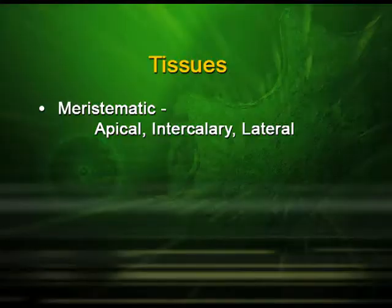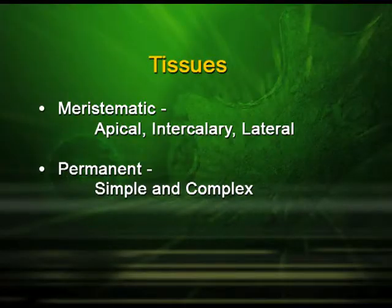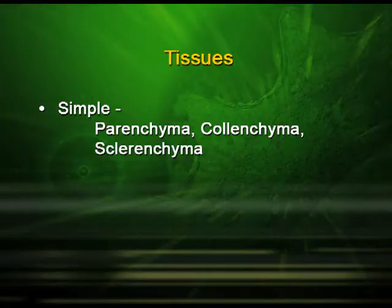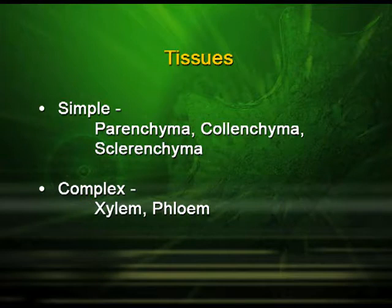The meristematic tissue gets converted into the permanent tissues. Meristematic tissues are of three types: the apical meristem, the intercalary meristem, and the lateral meristem. The permanent tissues are of two types: the simple tissues and the complex tissues. The simple tissues are made up of parenchyma, colenchyma, and sclerenchyma, and the complex tissues are made up of xylem and phloem.